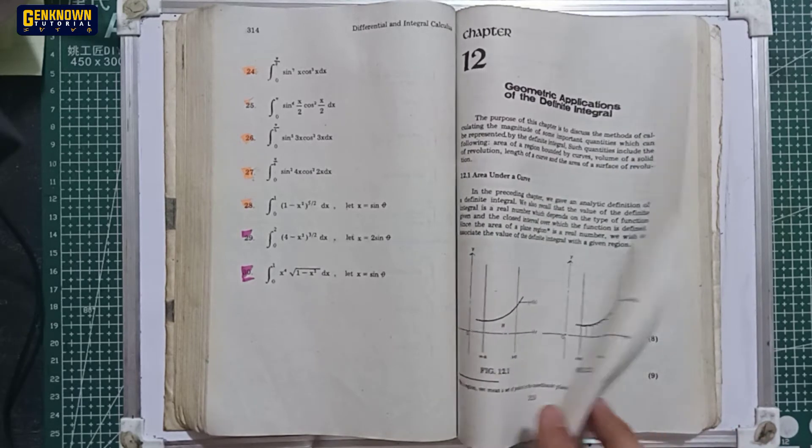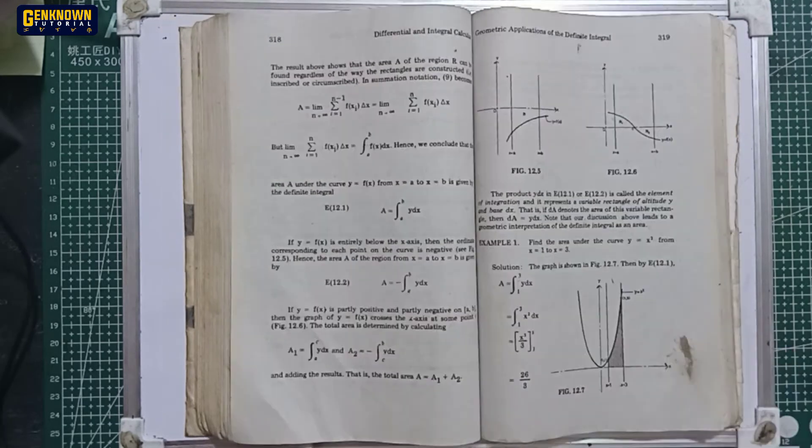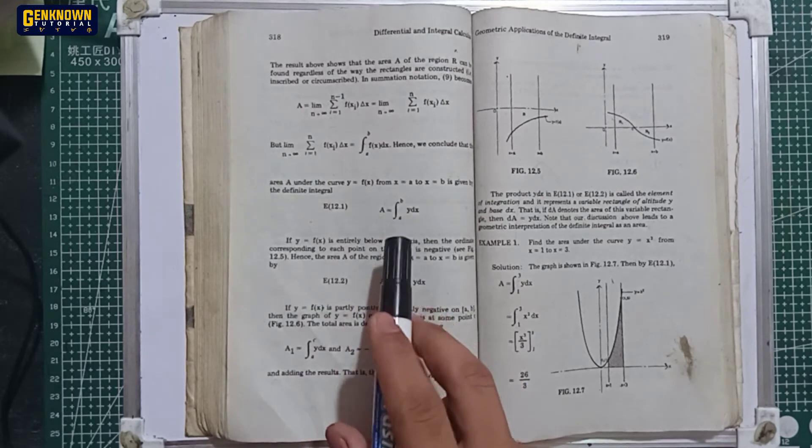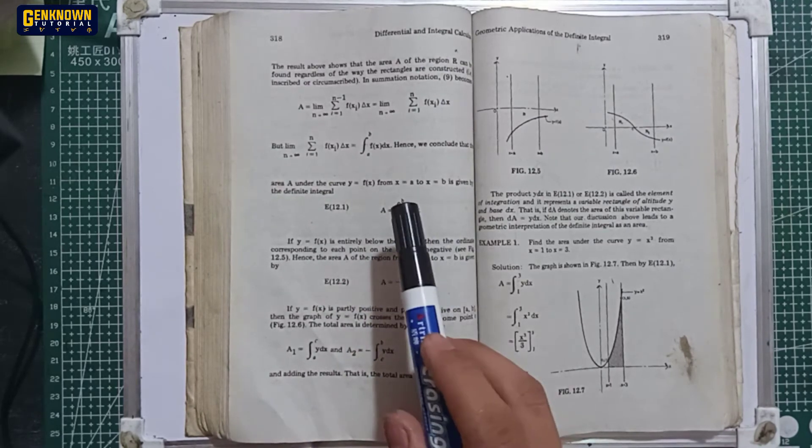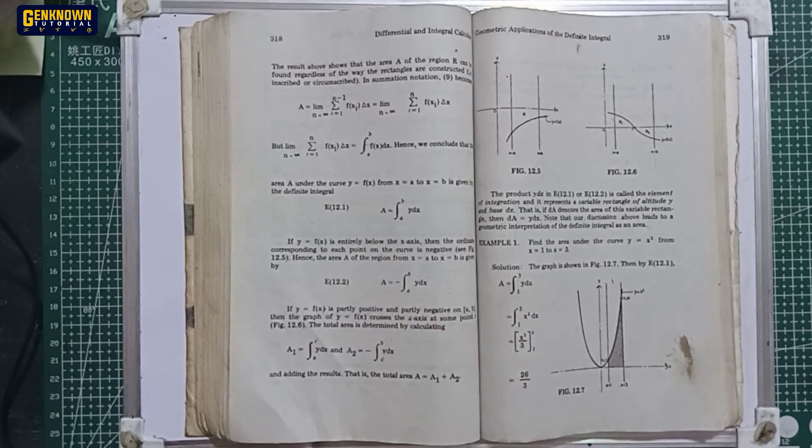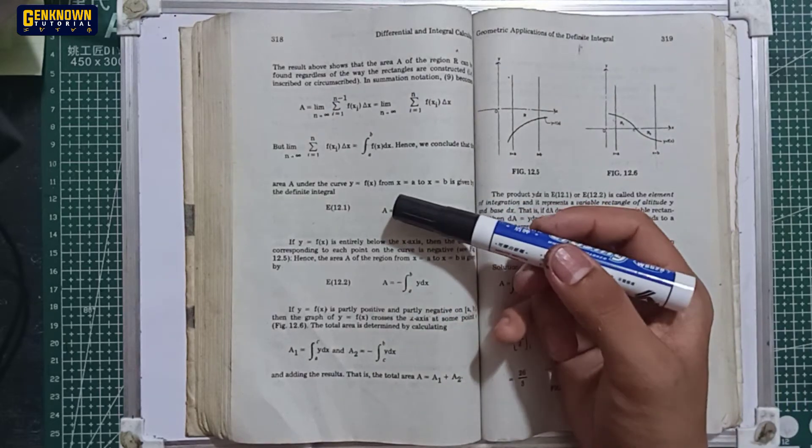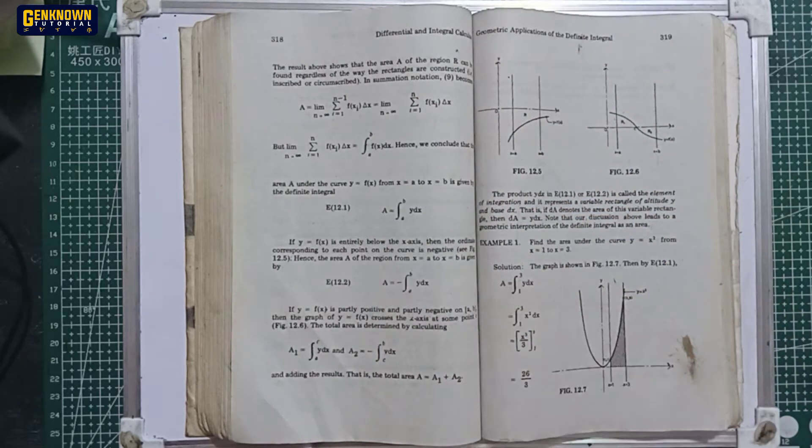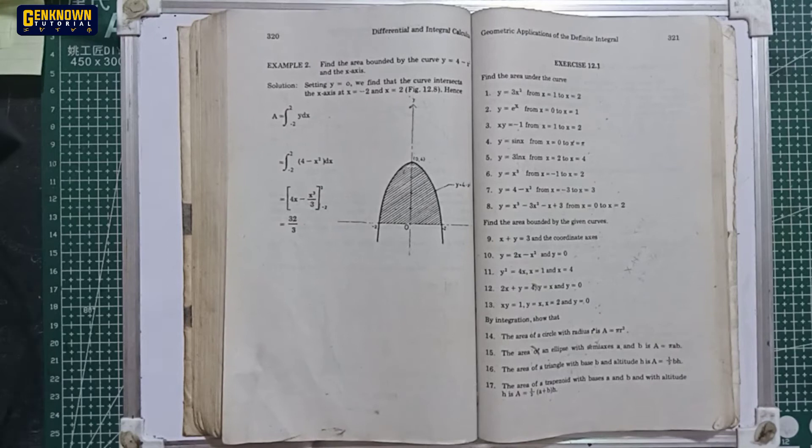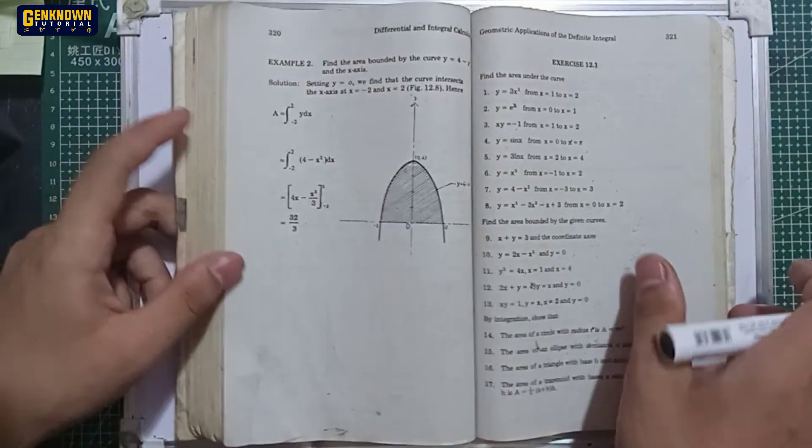In area under a curve, we must know how to plot an equation. We have the formula: Area is equal to the integral of y dx with the upper limit b and lower limit a. The first thing we should understand is that the upper limit b must be greater than a. Furthermore, let's try exercise 12.1. All odds muna tayo.